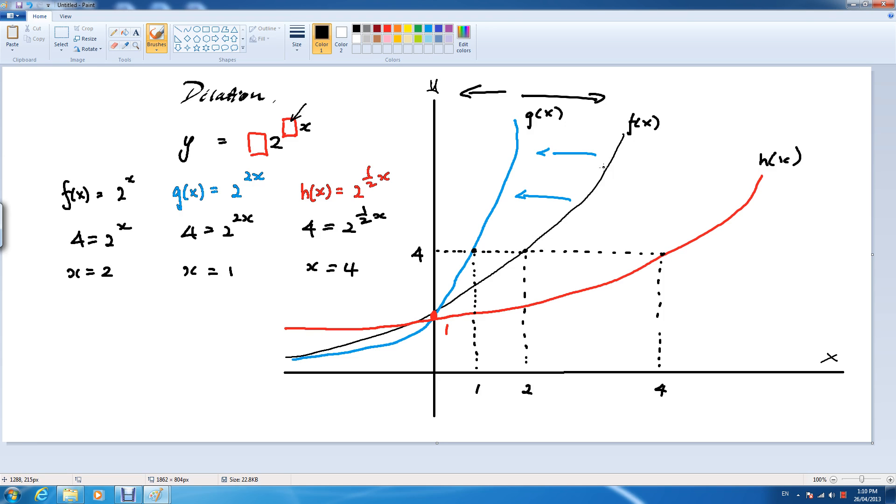From the black one to the blue one, it has been dilated by a factor of a half parallel to the x-axis. As you can see, it was 2, and for the same y-value, it's been halved.